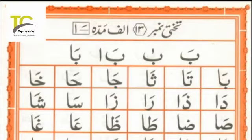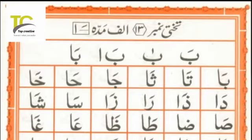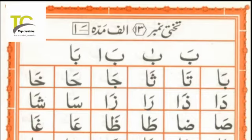ٹھیک ہے۔ جب یہ دونوں کنڈیشنز پوری ہو جائیں — الف خالی ہو اور اس سے پہلے زبر ہو — تو اس الف کو ہم تھوڑا سا کھینچ کر پڑھیں گے، یعنی two counts پڑھیں گے۔ منہ کو پورا اوپر کی طرف کھول کے ہم اسے two counts پڑھیں گے۔ اس کی جو duration ہوتی ہے پڑھنے کی، اسے two counts پڑھا جاتا ہے۔ یہ زبر سے مختلف ہوتا ہے۔